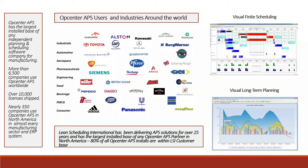OpCenter APS, formerly Preactor, is made up of two components: visual finite scheduling, which we're focusing on most today, and visual long-term planning, which I'll address but won't show live today. If you'd like a demo covering the planning side to address your specific issues, reach out and I'll be glad to work with you.